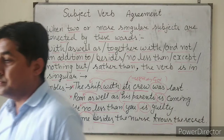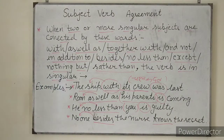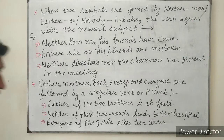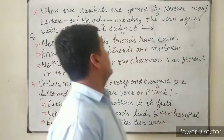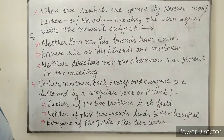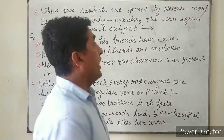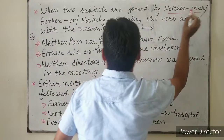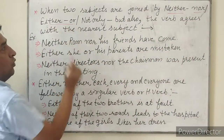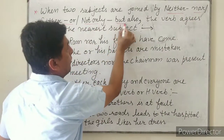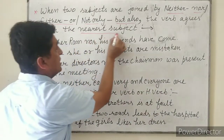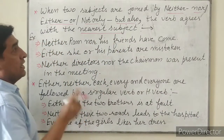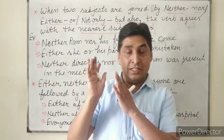Now we come to the next rule. When two subjects are joined by 'neither...nor,' 'either...or,' or 'not only...but also,' the verb agrees with the nearest subject. That is, the verb follows the subject that is closest to it.